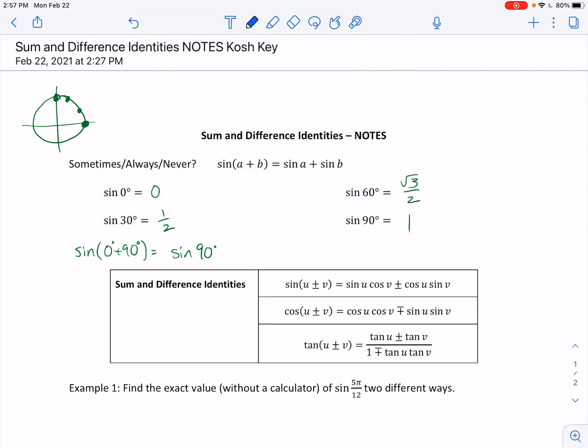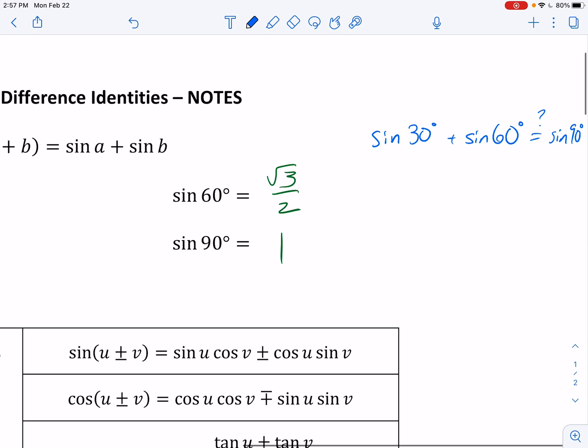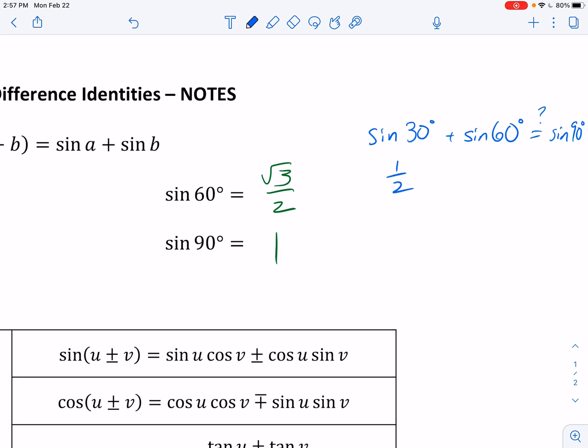So when I say, is this true, sine of 30 degrees plus sine of 60 degrees, does this equal, here's our question mark, equal sine of 90? Sorry, I'm way off to the side. What we have, sine of 30, we just wrote down to be 1 half. Sine of 60, we just wrote down to be root 3 over 2, when we said that sine of 90 was equal to 1. Well, that's not equal, okay?